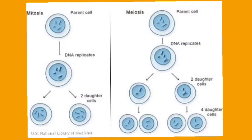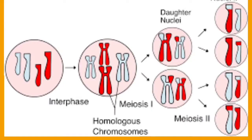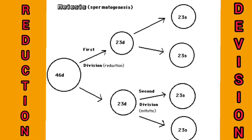Now, what is meiosis? In meiosis, cells undergo two consecutive divisions. Unlike mitosis where one cell divides into two daughter cells with the same chromosome number, in meiosis one cell divides into two, and then those two cells divide further to become four cells. In the second division, the chromosome number becomes half — it becomes haploid.